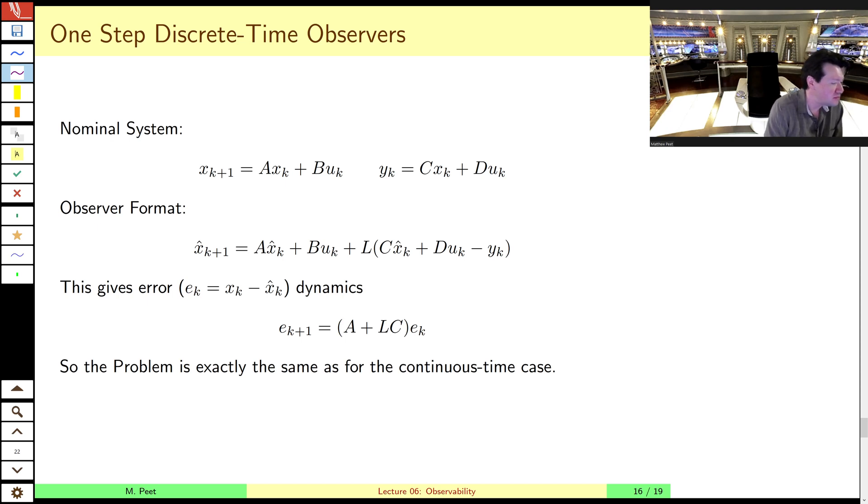So the dynamics of the system you're observing are given in discrete time here. And we assume from the previous lecture that we've found a satisfactory controller equals kxk. And we would like to implement that not using the actual full state, because we don't have access to that information, but instead using an estimate of the state, x hat of k.